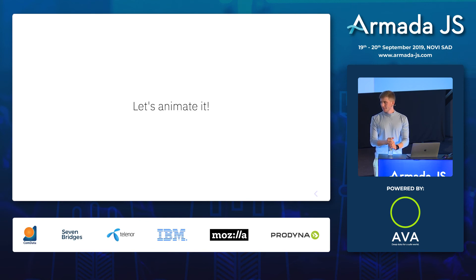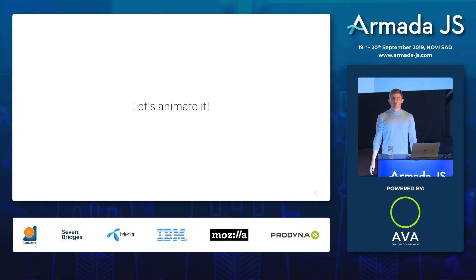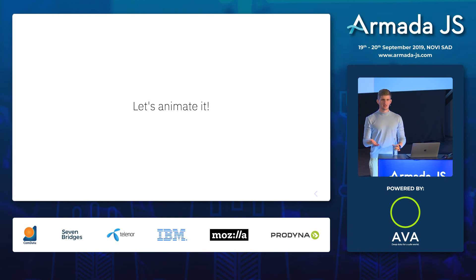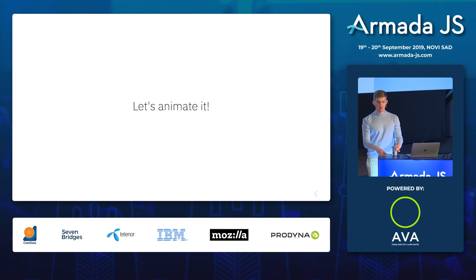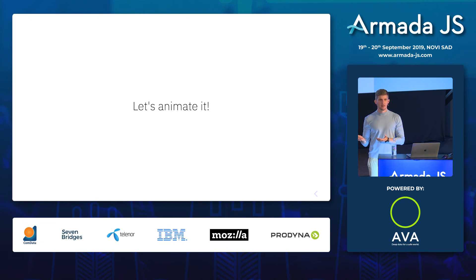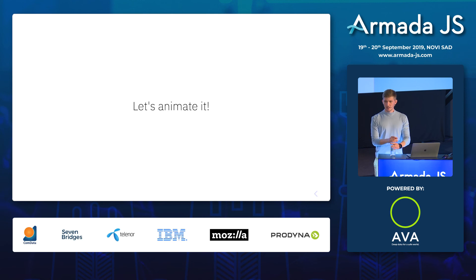Should we be animating while developing, or include animations once the app is done? It really depends on the use case. Some animations — like drag-and-drop — are so essential to the interaction pattern that there's no way you postpone them until the end; they must be built in from the very beginning. However, something like a page-to-page transition animation could come later — it's easy to edit, so why not?